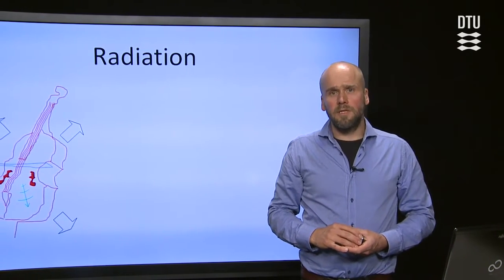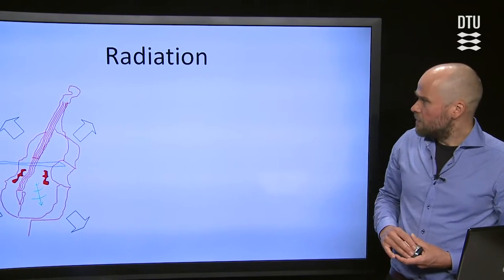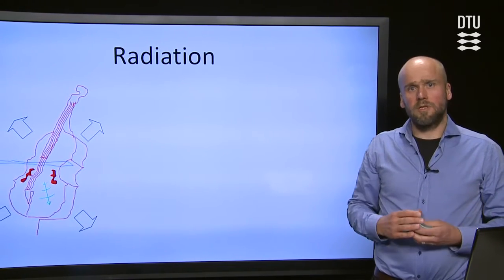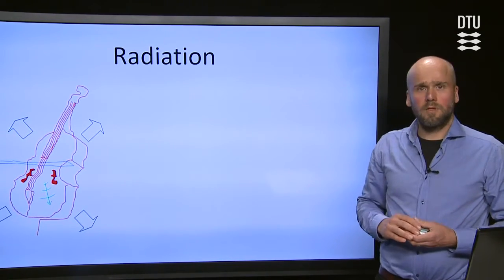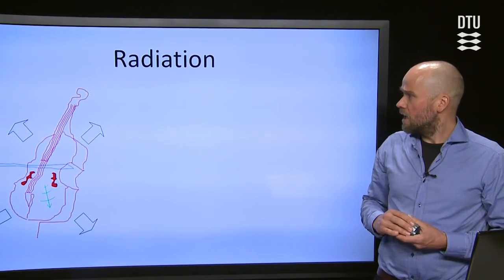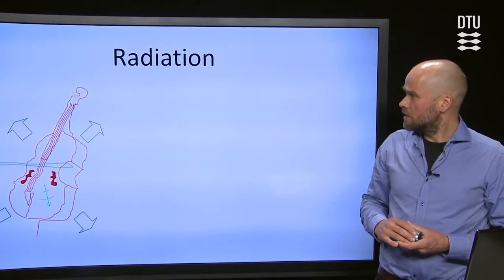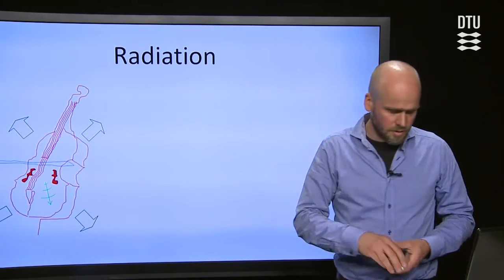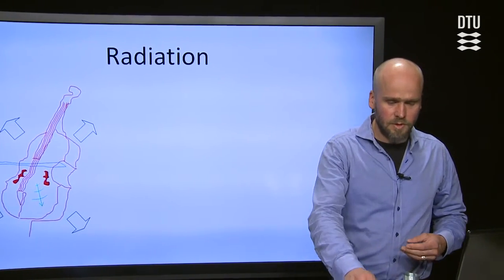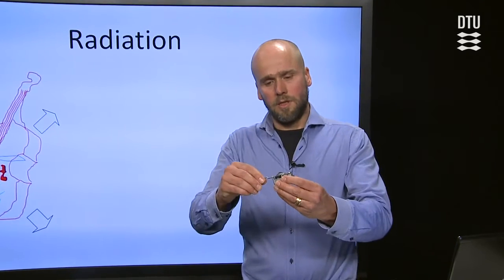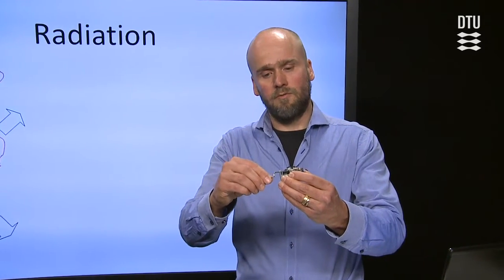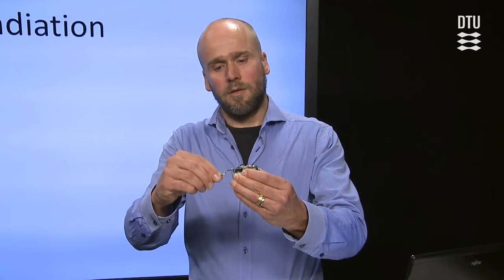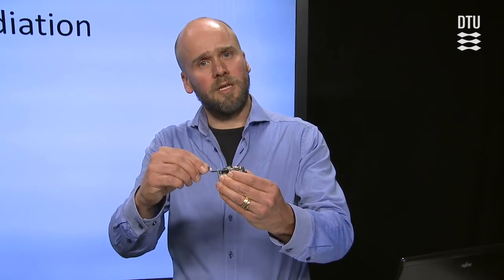The radiation happens when we have a big surface that can radiate sound. Typically we will have bending waves in this structure. It could be a musical instrument like this. I could illustrate this with this toy.